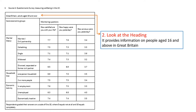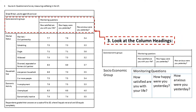After you have looked at the title, you look at the heading. Here the heading says it provides information on people aged 16 and above in Britain, so you know who or what it is about. There may be additional information in the heading. Then you look at the column headings — what each column in the table indicates. The first column is socio-economic group, and the next three columns indicate the monitoring questions asked: how satisfied are you with life, how happy were you yesterday, and how anxious were you yesterday.